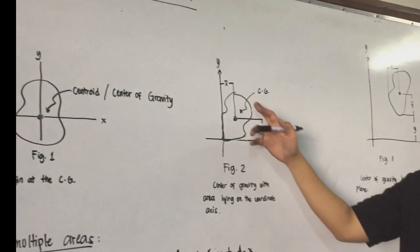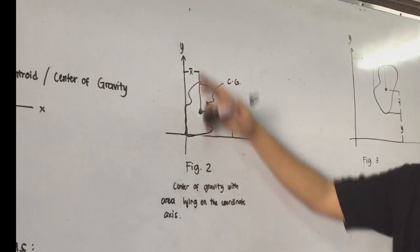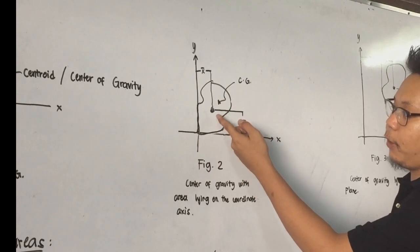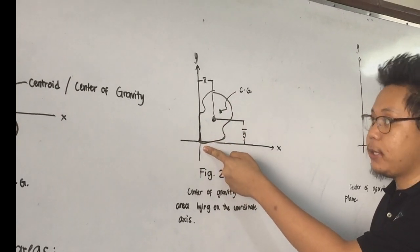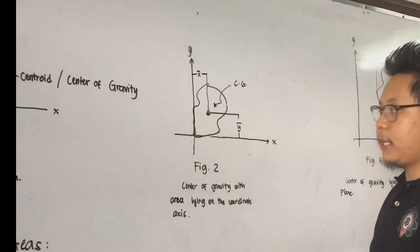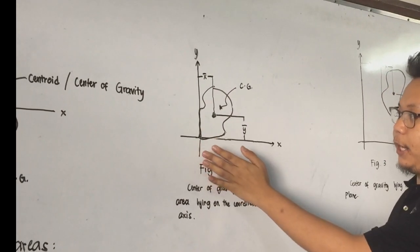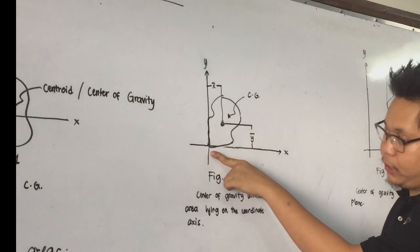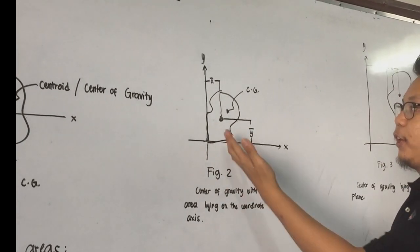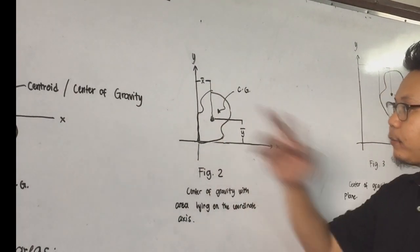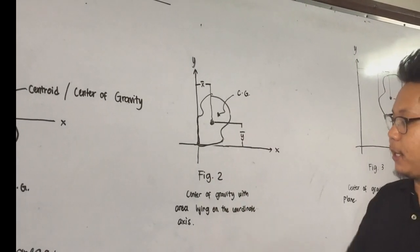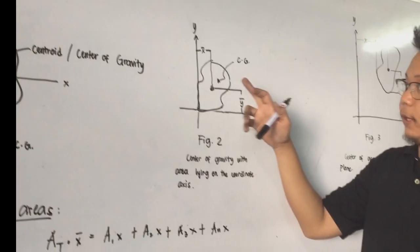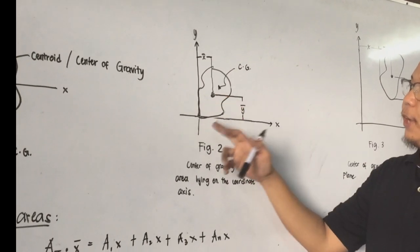We also have figure 2. We have our irregularly shaped object that is tangent to the x and y-axis. In most cases, our center of gravity will not coincide with our origin because our figure is situated in the first quadrant of our Cartesian coordinate. Therefore, our center of gravity or center is no longer coinciding with the origin. That is why we will try to find out the location of the center of gravity. Figure 2 shows the center of gravity with the area lying on the coordinate axis, and our task is to find the x and y-coordinate of our center of gravity.